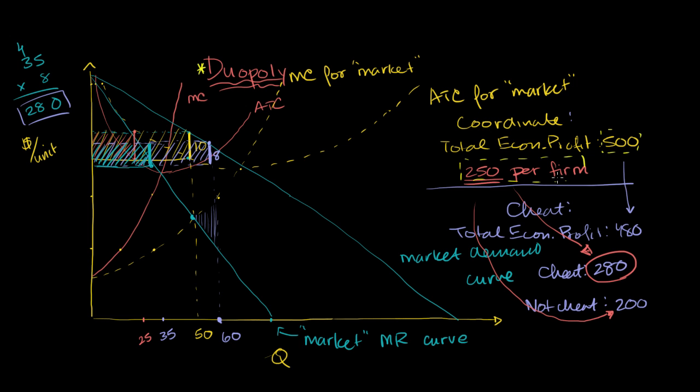But then we saw that there was an incentive to cheat. By producing extra units, the marginal economic profit on those incremental units would be negative from a market's point of view. The whole economic profit would shrink, but the cheater would get a bigger chunk of it, going from $250 per period to $280. It would be all at the expense of the non-cheater, who would lose even more than what the cheater gained.